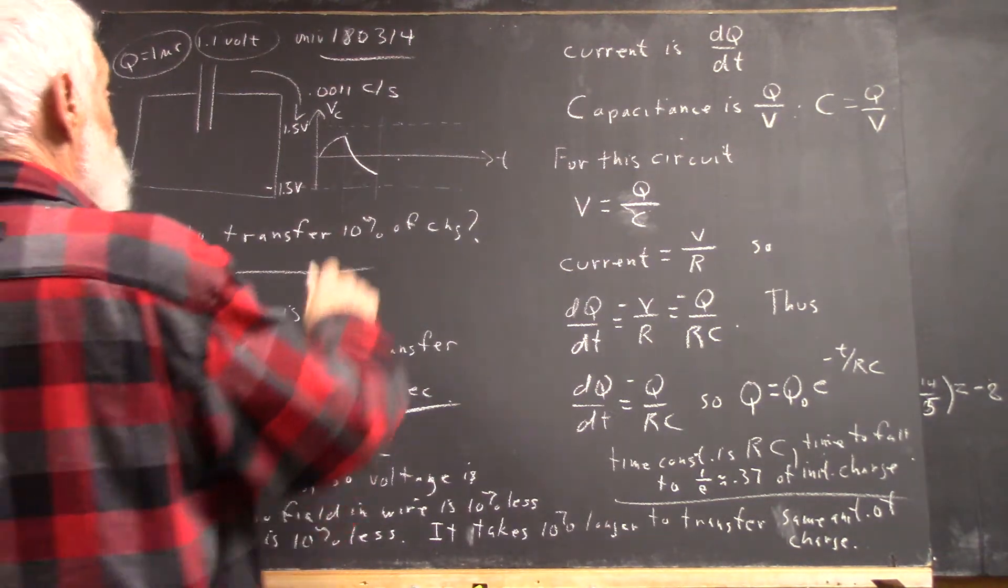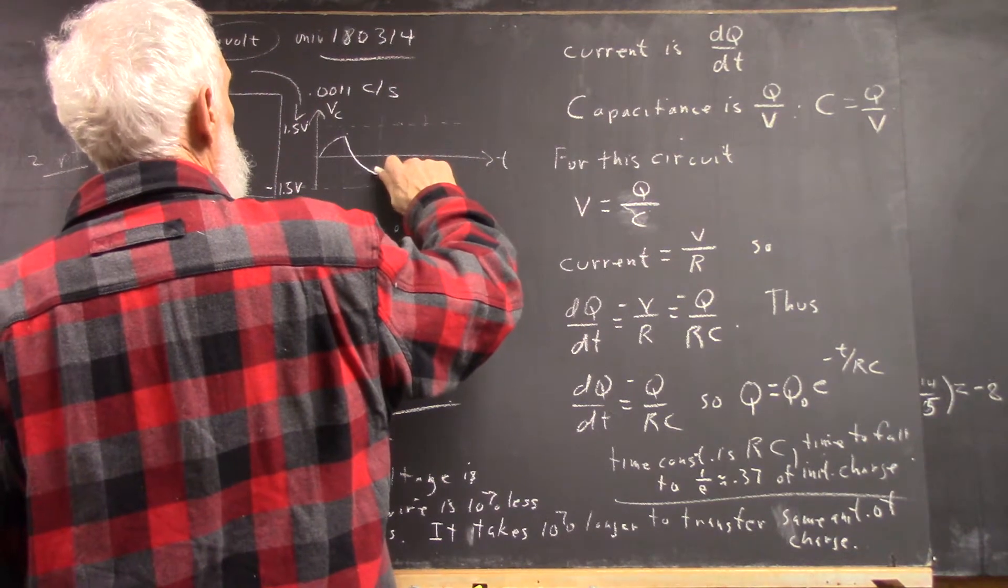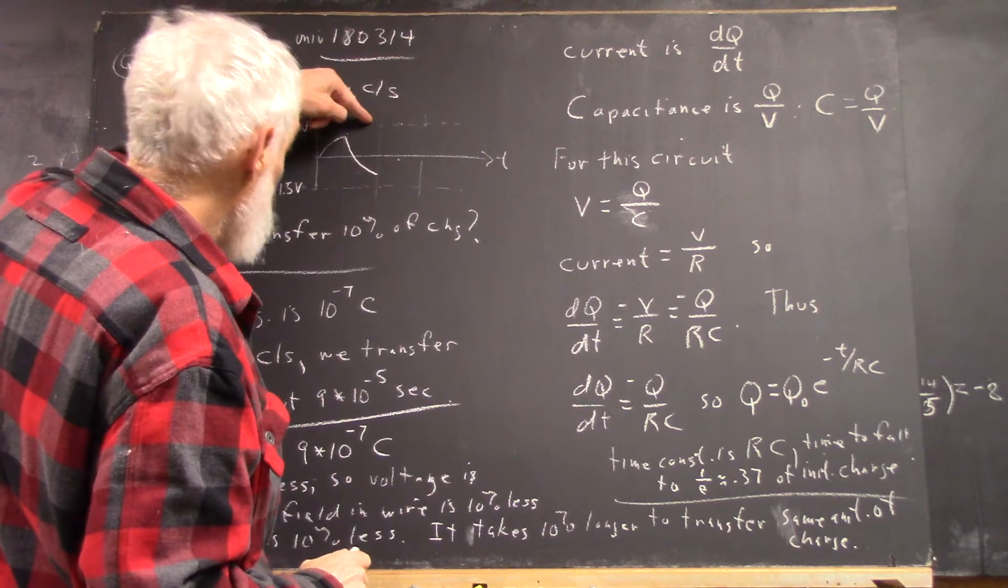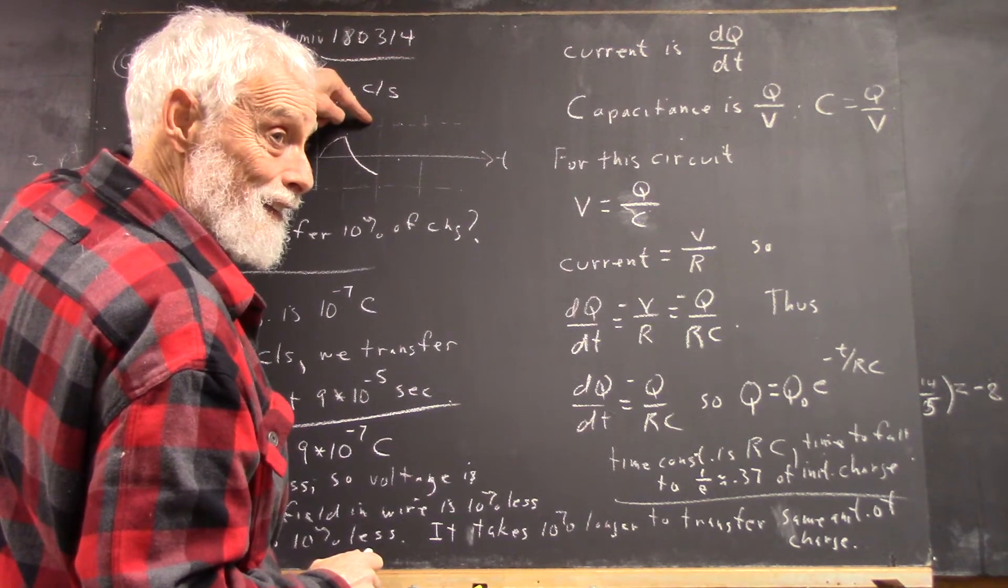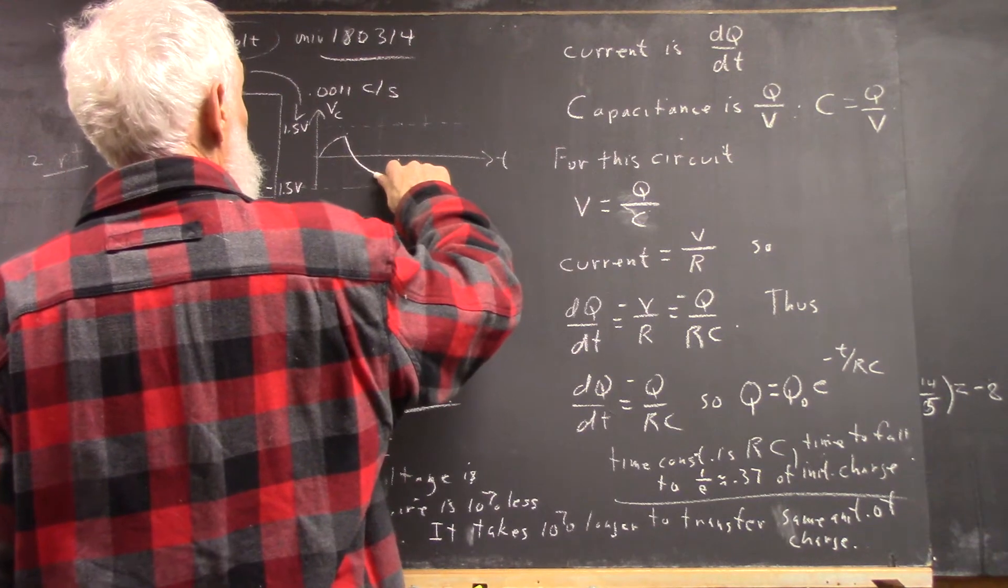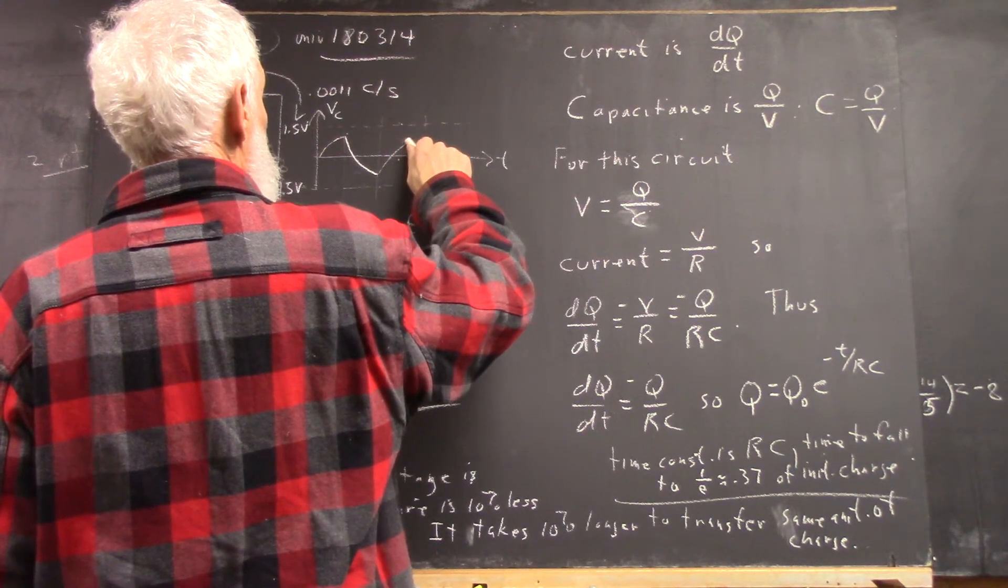And then it's going to go two-thirds of the way back up to this because you're going to switch it back, so it's going to go two-thirds of the way up to here. Now, that's not going to be here because two-thirds of the way from here to here, it's not the same as two-thirds of the way from here down to here, but it's going to come back up to about two-thirds of this.